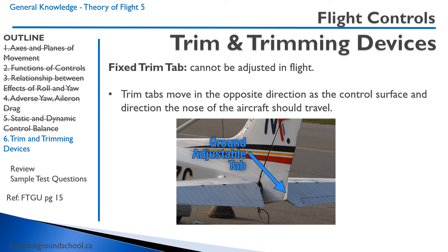The first trim we're going to talk about is a fixed trim tab. On the Cessna 172, the rudder has a fixed trim tab. This cannot be adjusted in flight — it is adjusted on the ground by an aircraft maintenance engineer in response to a pilot complaint. For example, if you are flying and the airplane always requires right rudder to keep straight, the aircraft maintenance engineer can adjust that fixed trim tab, perhaps move it a bit to the left, which forces the rudder to the right, requiring a bit less force when flying the aircraft.